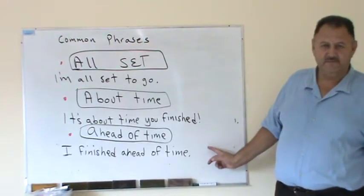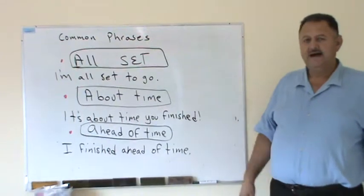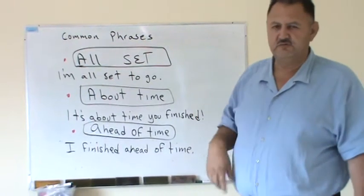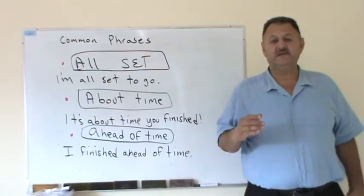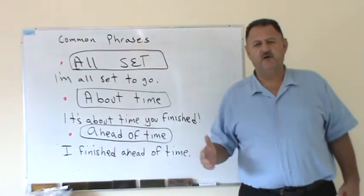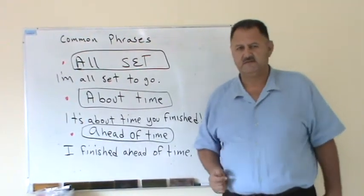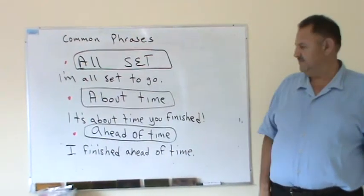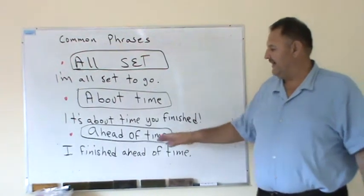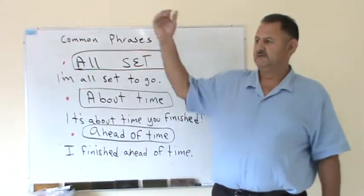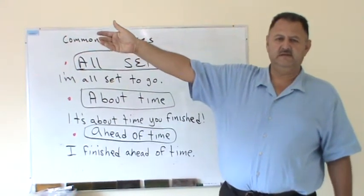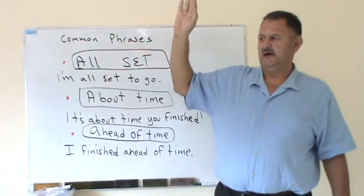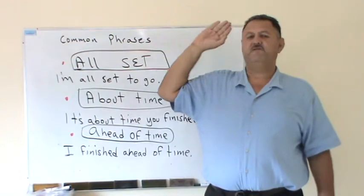Ahead of time. Esto nos puede confundir. Ahead of time means that you finish something before the due date, before you were supposed to finish it. Something you finish before the due schedule finish time. Ahead means something that is done, something that is in front of you normally.